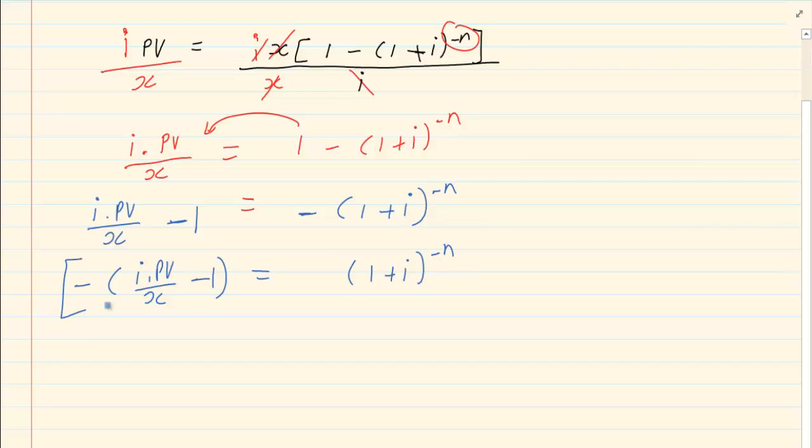Now remembering your log rules, you are going to bring a log in front of each one. Then you are going to bring your minus n in front. So I am going to have minus n log (1 plus i) equals log [negative i times PV over x minus 1].